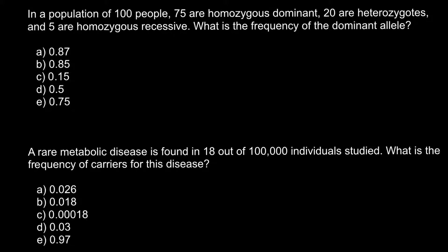So we have homozygous dominant genotype, that is capital A, capital A. And we have 75 people that belong to this genotype, and 20 people belong to this genotype. And we also have homozygous recessive genotype, that is small a, small a, and we have 5 people that belong to this genotype.